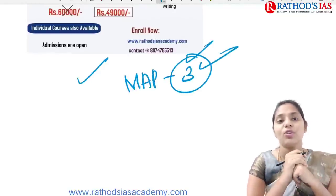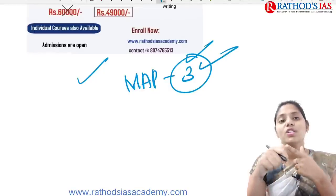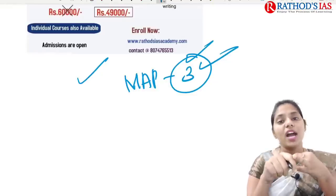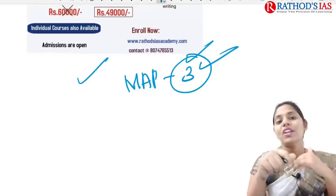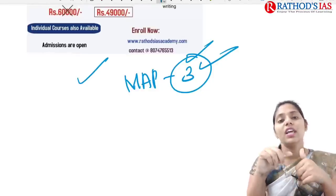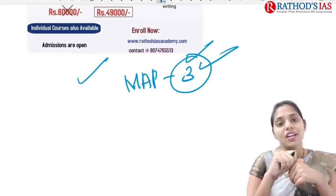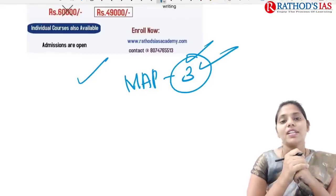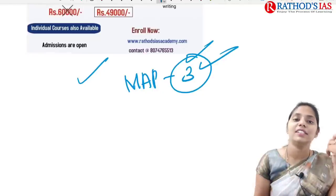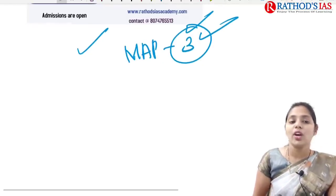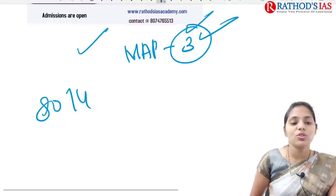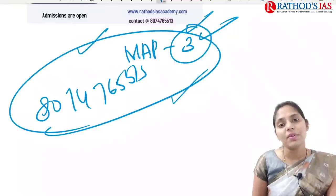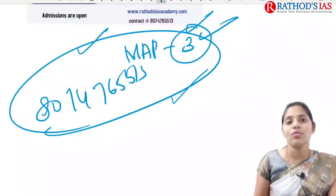A mains answer writing practice course for the July batch starts on 3rd July, with weekly targets, daily questions, answer evaluation, model answers, and one-to-one mentorship. Visit ratorsaisacademy.com for courses. The instructor personally teaches geography and ethics. For queries, call or WhatsApp 8074765513.